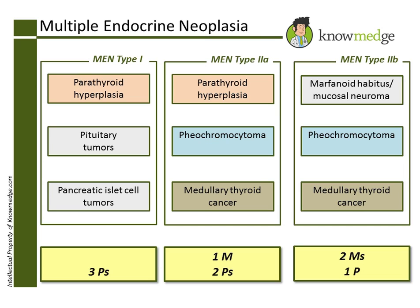Pheochromocytoma releases catecholamines. Therefore, both MEN type IIa and IIb will have elevated urine catecholamine and its metabolites appreciated. Choice E is incorrect. Parathyroid hyperplasia is very rarely seen in MEN type IIb.